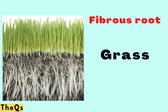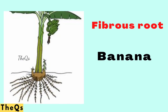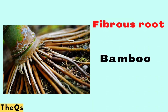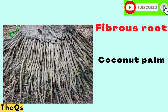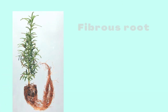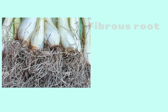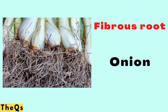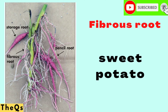Grass has fibrous roots, and then banana. Bamboo also has fibrous roots, as well as coconut palm. Next in the list is rosemary — rosemary has a fibrous root. Onion also has a fibrous root.